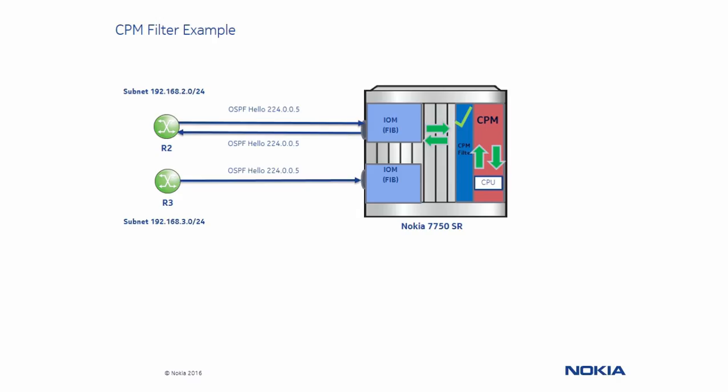Router R3 also sends an OSPF flow packet to the Nokia 7750 service router, and the 7750 service router sends the control plane packet to the CPM to be processed, where the CPM filter checks and sees an entry to deny any OSPF packets from router R3. The CPM filter will silently drop the packet. Therefore, no OSPF adjacency is formed.